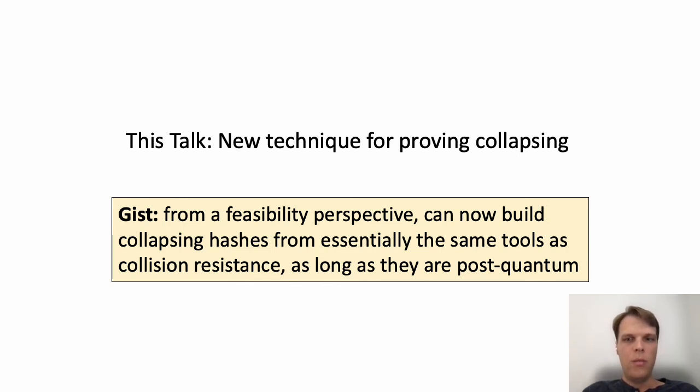The gist is that we can now build collapsing hashes from essentially all the same tools that are currently known to give collision resistance, as long as those tools are post-quantum. Note that while the tools are the same, in order to prove collapsing the construction changes.